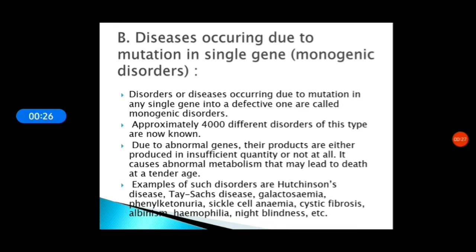Diseases occurring due to mutation in a single gene are also called monogenic disorders. The disorders or diseases occurring due to mutation in any single gene into a defective one are called monogenic disorders. Approximately 4000 different disorders of this type are now known. Due to abnormal genes, their products are either produced in insufficient quantity or not at all, causing abnormal metabolism that may lead to death at a tender age.